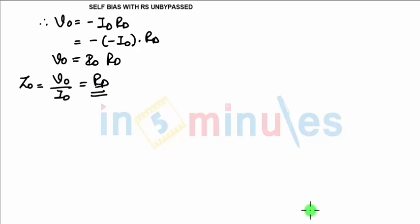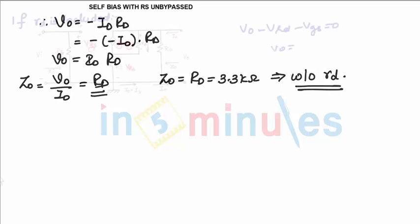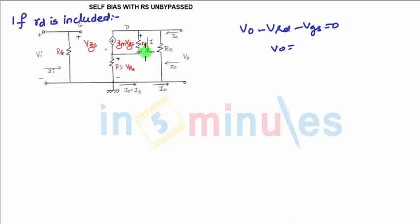The output resistance vo divided by io equals Rd (capital Rd). This is without considering small ro. From the problem, capital Rd is 3.3 kilo-ohms — this is without small ro. Now, considering small ro, the resistance Rd is included between the drain and source. We write Zo as vo divided by io for vi equal to 0 volts.